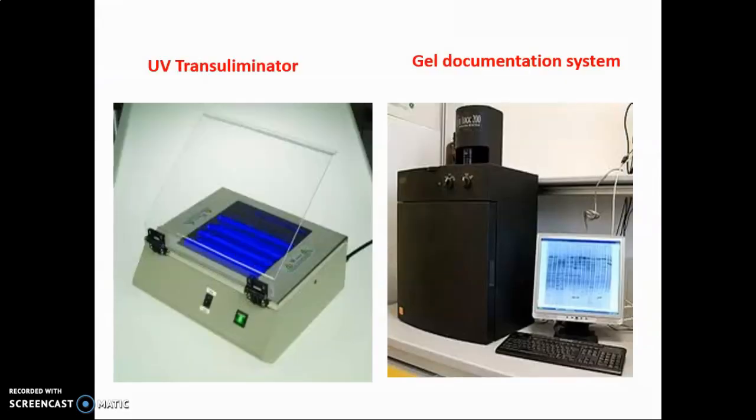Transilluminator. An ultraviolet (UV) transilluminator is a standard piece of equipment used in life science laboratories for visualization of target DNAs and proteins. The wavelength of UV transilluminator is 312 nanometers.